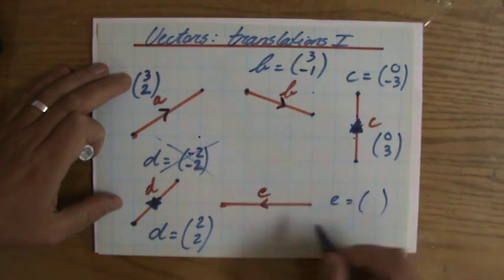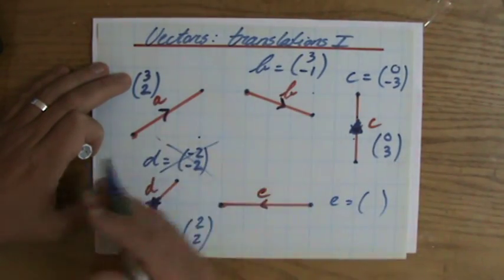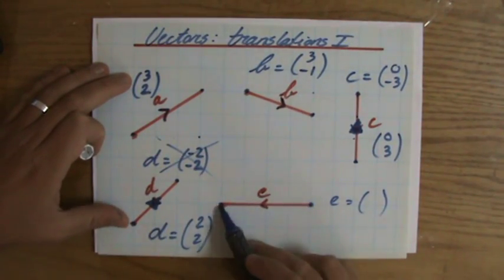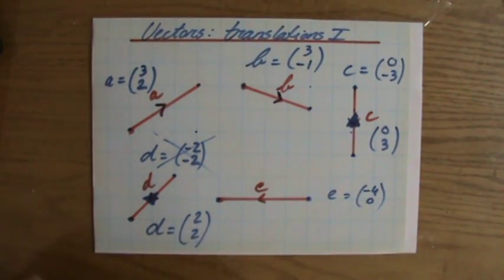What about E? Last one. Direction. So I'm starting here, finishing there. My horizontal translation. One, two, three, four to the left. So that will be minus four. And zero up or down.